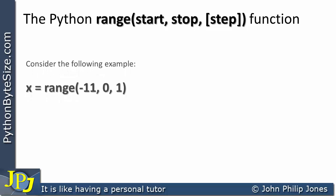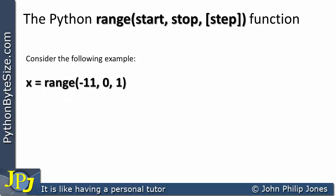Before we look at backward indexing across a Python string, let's have a quick look at the range function. Here we have this particular example where x is assigned the range, and you can see minus 11, 0, and 1. Minus 11 is the start value, 0 is the stop value, and 1 is the step.